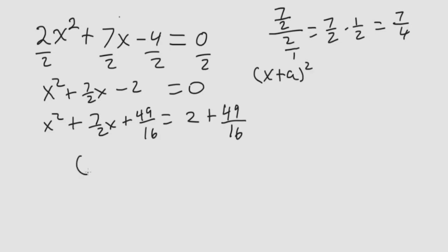So we have x plus 7 fourths squared is equal to 2 plus 49 over 16. So 2 plus 49 over 16. This is the same as multiplying the 2 across by 16.